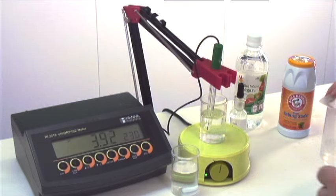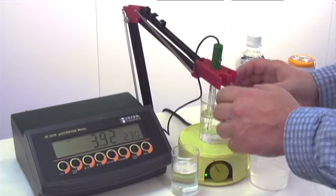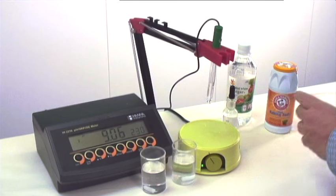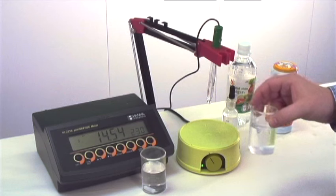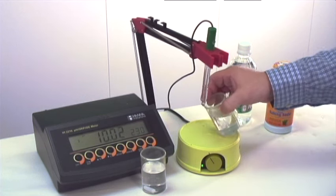Now I'm going to rinse off the electrode, and we're going to take the pH of the deionized water with baking soda.